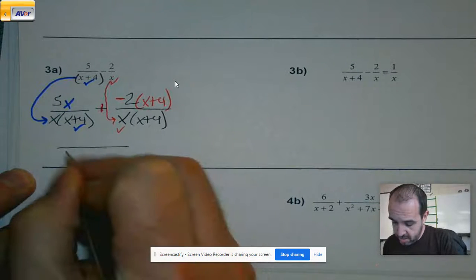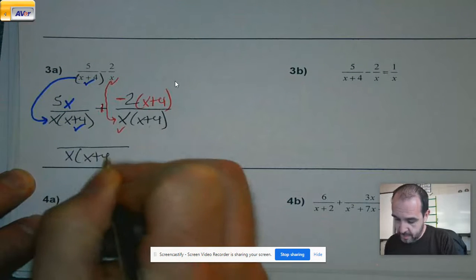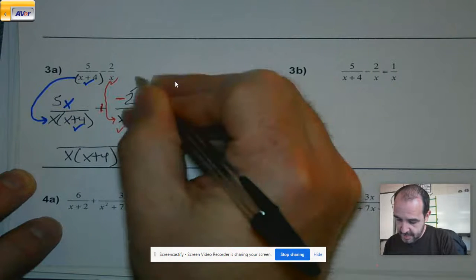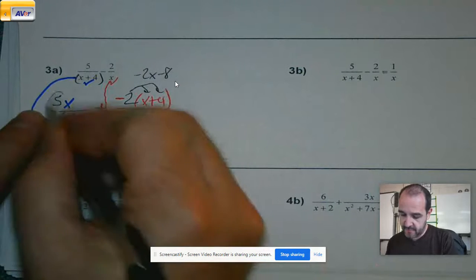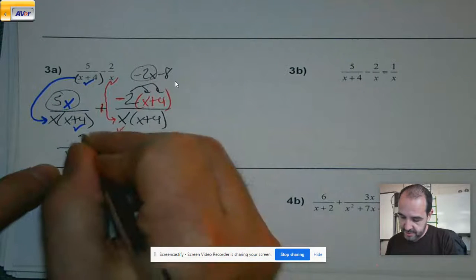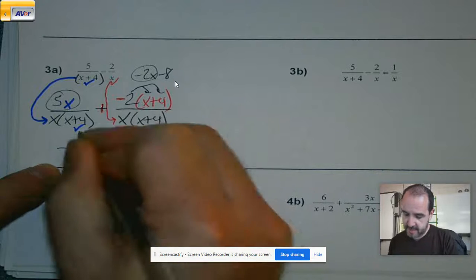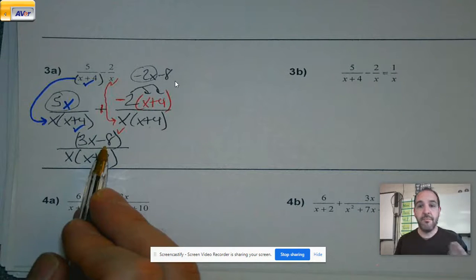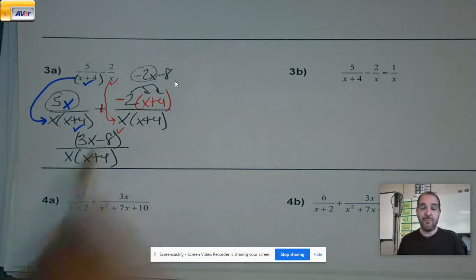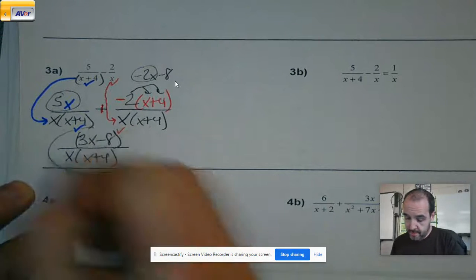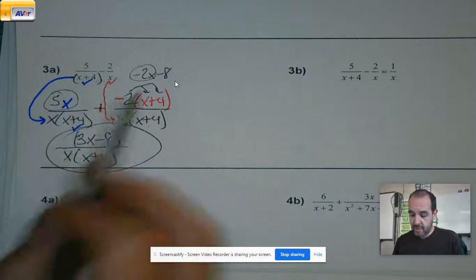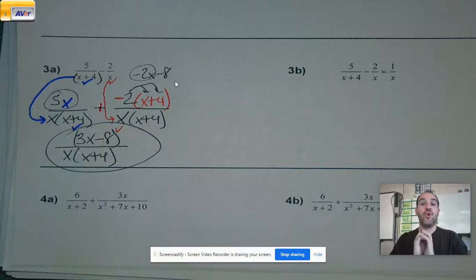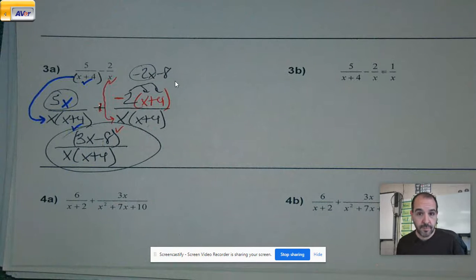Let's simplify. So here, we got negative 2x minus 8. So let's do some like terms here. 5 minus 2 is 3x minus 8. Can I factor this? No. Can I simplify? Can I take anything out of it? No. I'm done. Don't cancel stuff. Don't set it equal to zero. There's no equals. You're building fractions. You're simplifying the numerator. You're done.